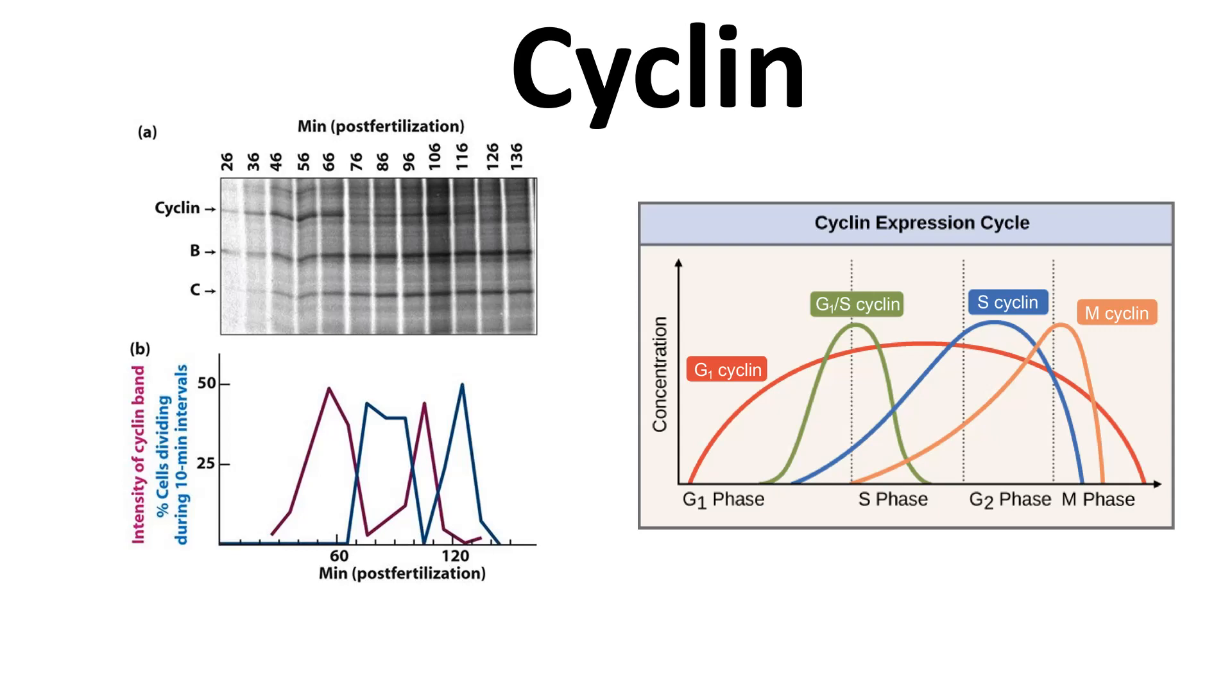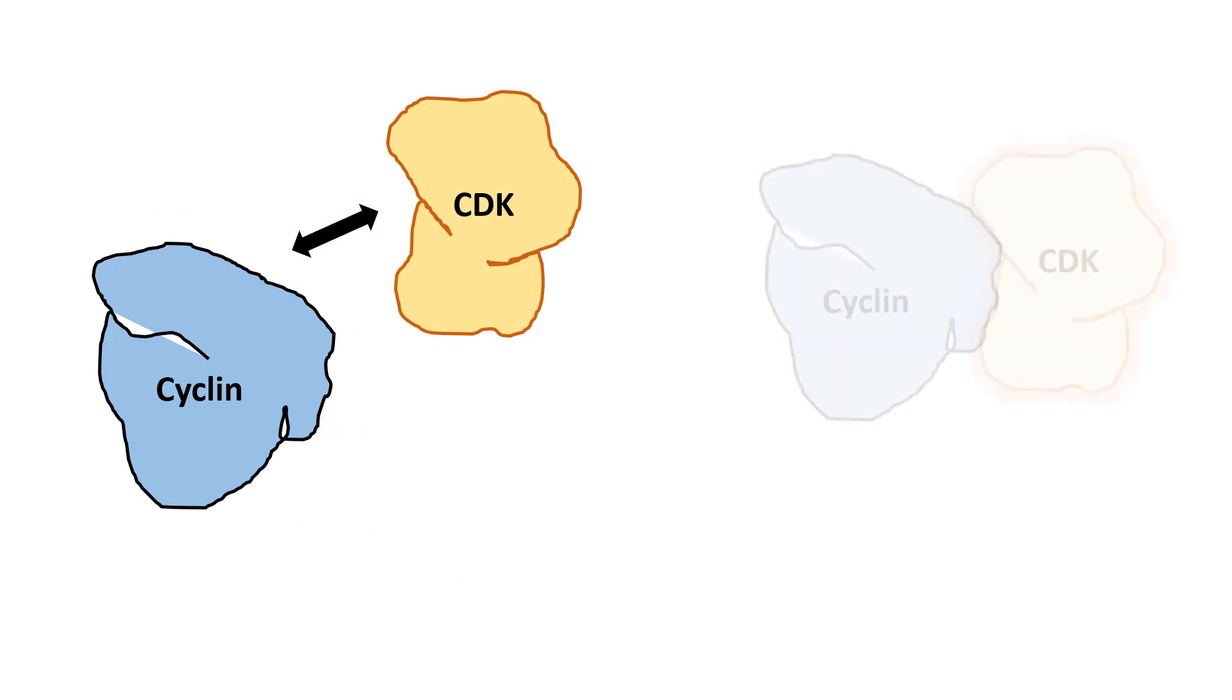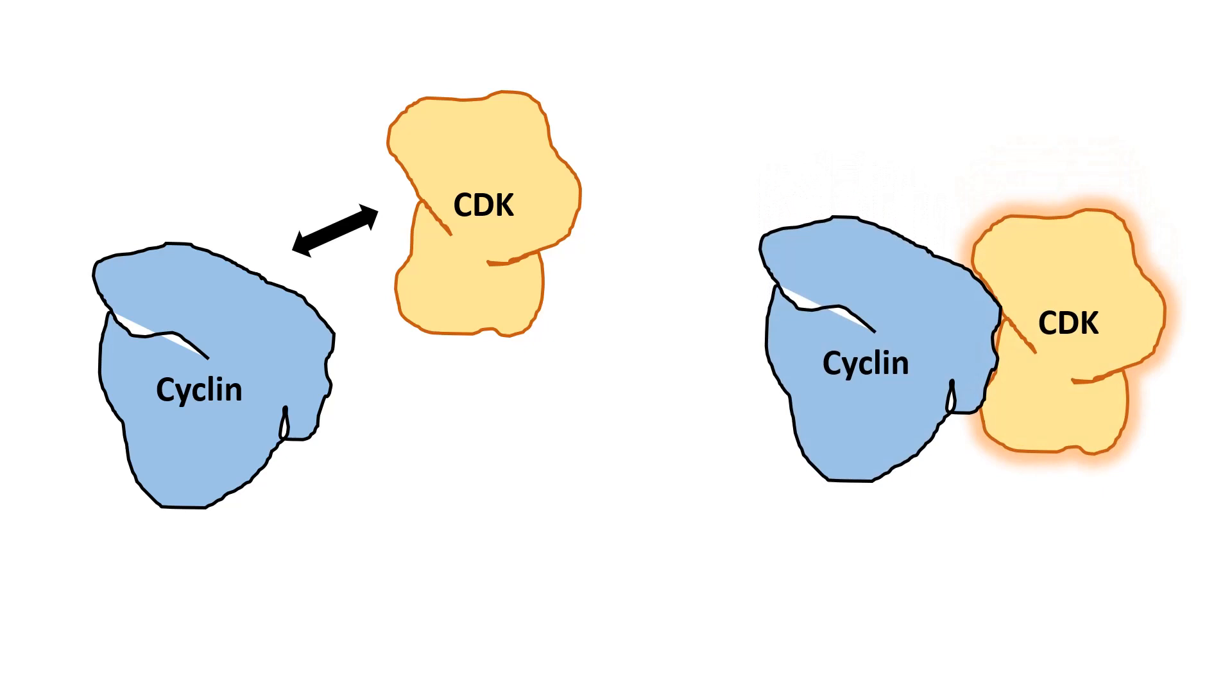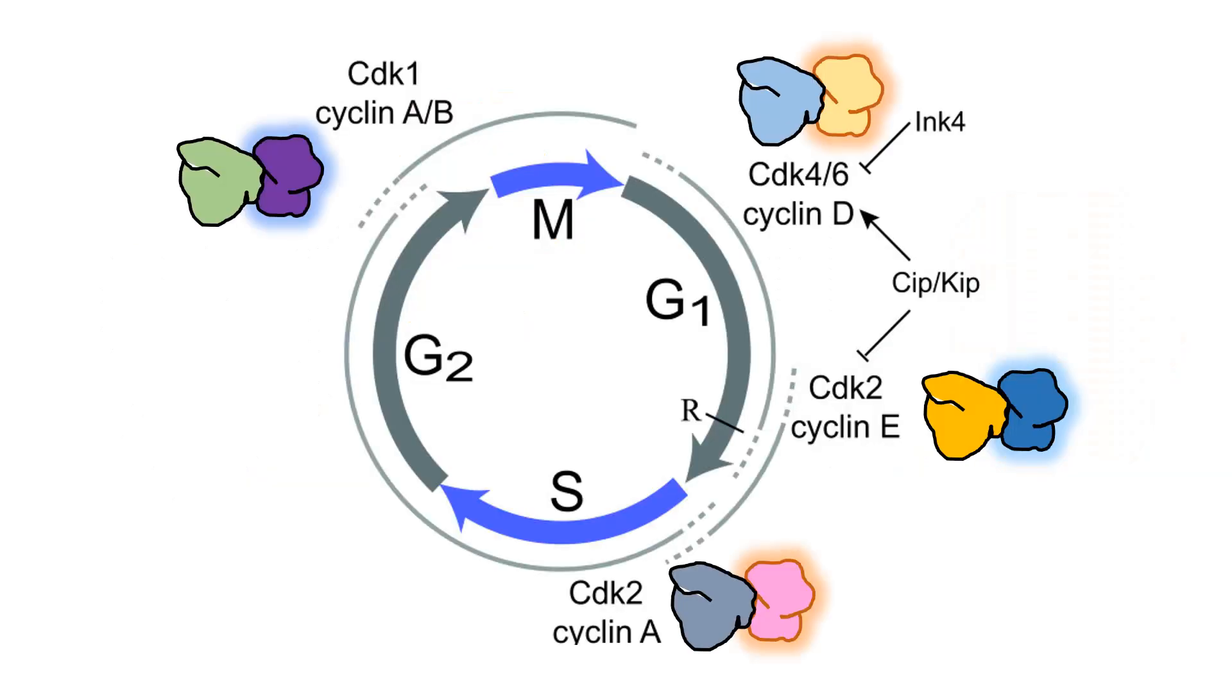But the cyclins cannot work in isolation. They need their partner, which are cyclin-dependent kinases. The cyclin and cyclin-dependent kinase interaction gives rise to a functional cyclin-CDK complex. The cyclin-CDK complex works like a kinase because the CDKs are basically serine-threonine kinases. They can phosphorylate several downstream effectors and modulate several physiological processes that result in cellular division and can prevent or induce cell division.